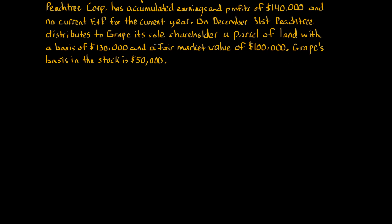The first step is to consider the consequences to the corporation distributing property or cash. Second is to consider the consequences with respect to adjusting current earnings and profits from step one for any gains. Step three is to look at the consequences to the shareholder — here, that's Grape. When we do that, we look at a three-part waterfall: the distribution is characterized as a dividend to the extent of earnings and profits, then return of capital reducing the shareholder's basis, and finally capital gain distribution for anything remaining.